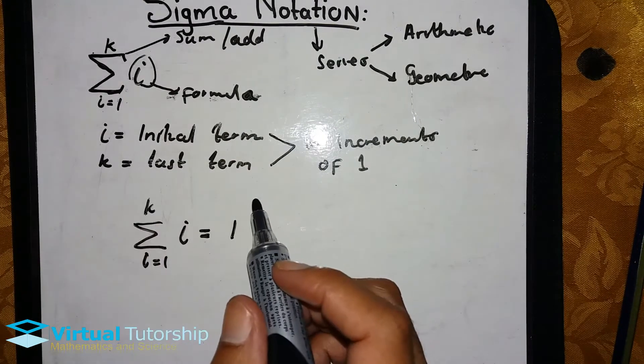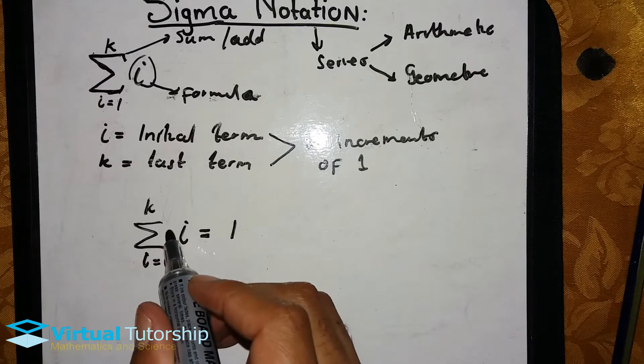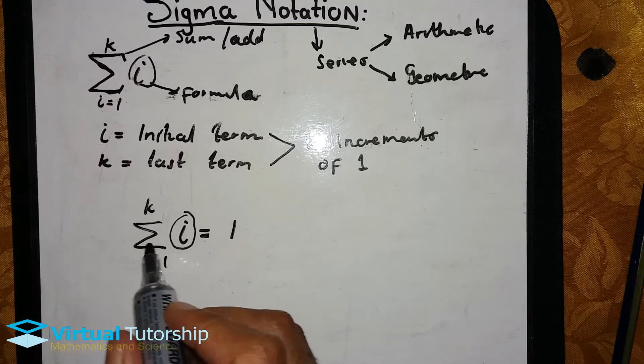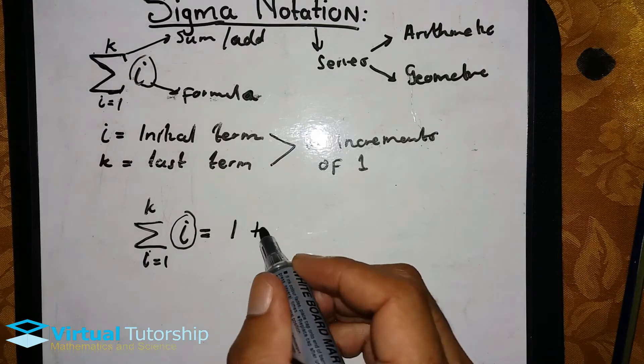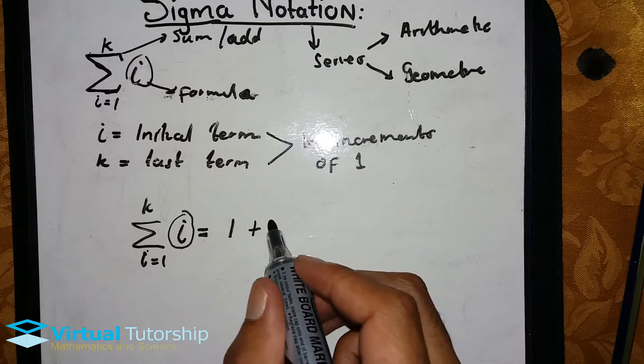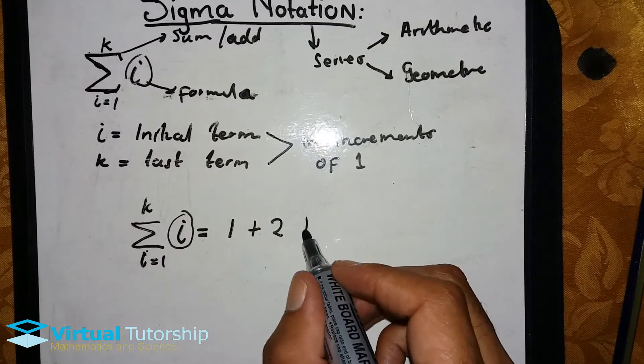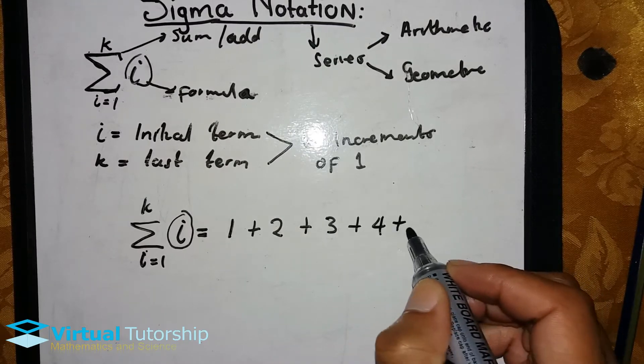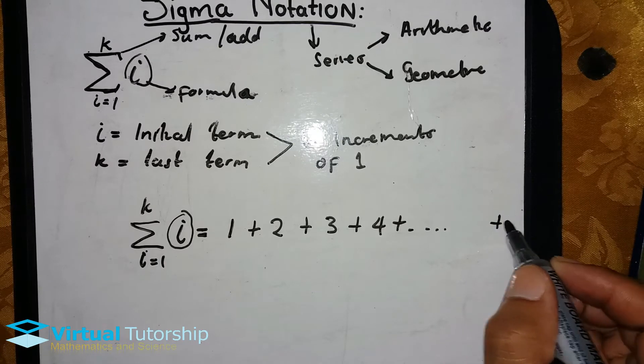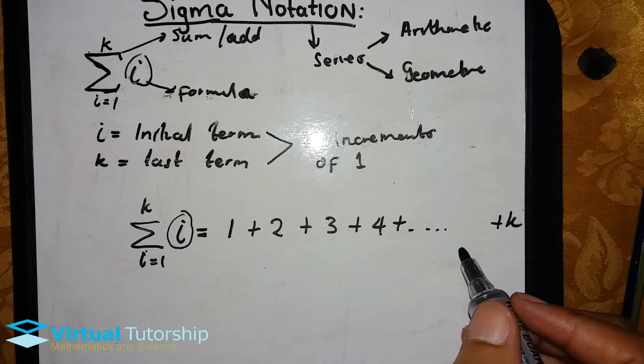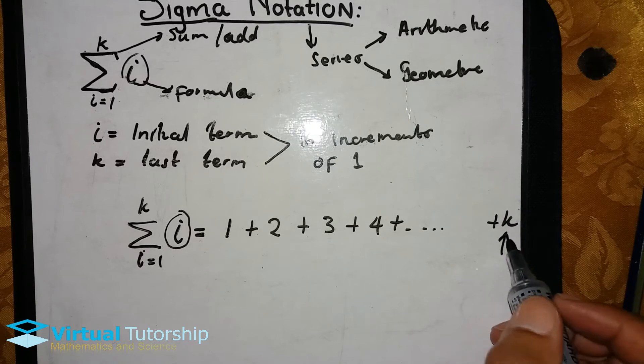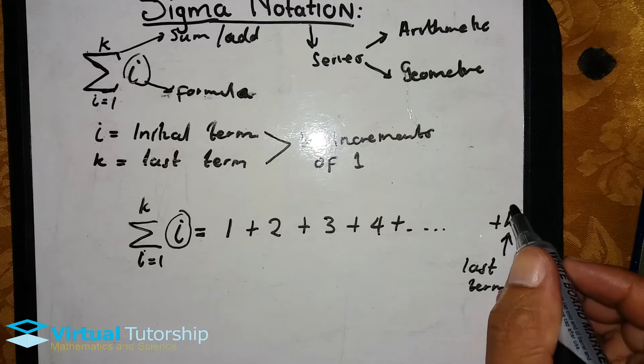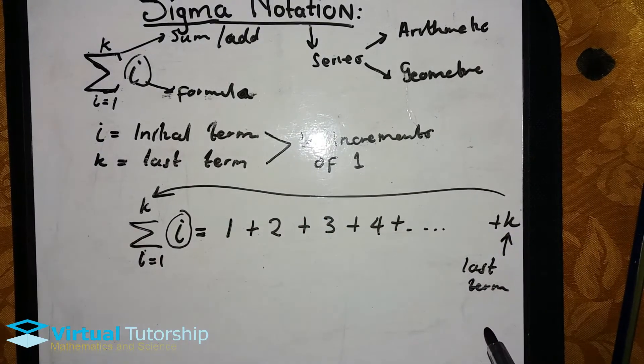When you expand it, the first substitution you make is the initial term, which is i equals one. So the formula—the first value you substitute is i equals one. The second one is two, the third one is three, the fourth one is four, plus all the way up to plus k.